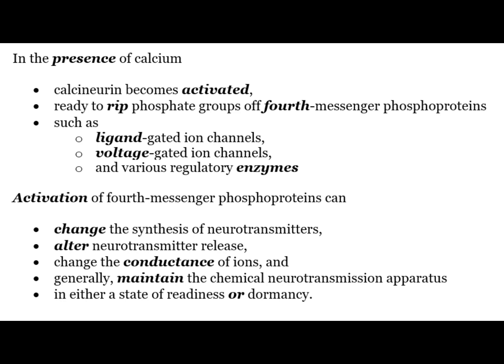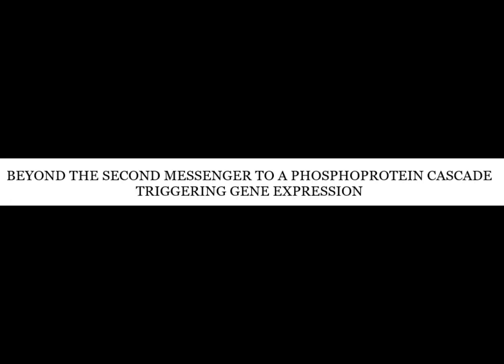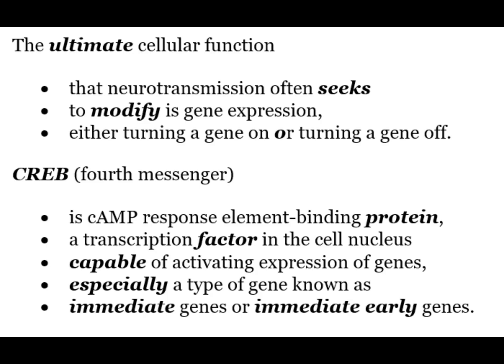The activation of this fourth messenger can change the synthesis of neurotransmitters, can alter neurotransmitter release, can change the conductance of ions and generally maintain the chemical neurotransmitter apparatus in either a state of readiness or dormancy. The ultimate cellular function that neurotransmitter often seeks is to modify gene expression, either turning a gene on or turning a gene off.